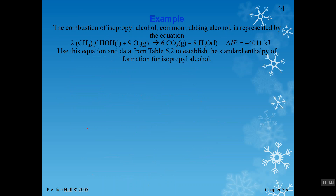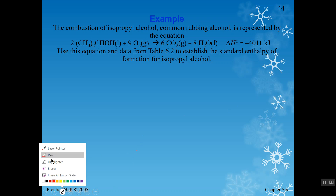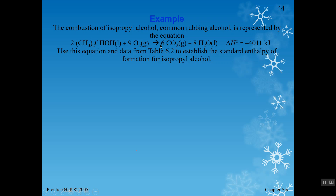In the next example, they give the enthalpy of the reaction and ask you to find the enthalpy of formation of isopropyl alcohol. Oxygen has a value of zero since it's O2, and the other values are in the table used in the previous example. This is left as a practice problem — feel free to reach out if you have any issues solving it.